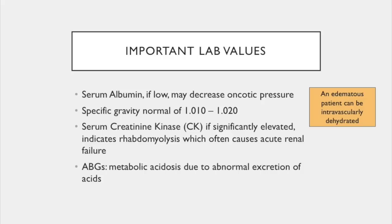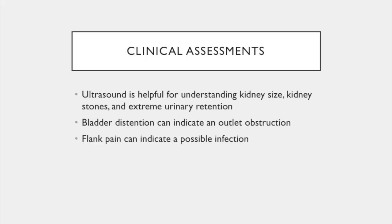Another important lab to evaluate kidney failure status is arterial blood gases, which can reveal a decrease in the reabsorption of sodium and water in acidosis. Useful clinical assessments include ultrasound, helpful for understanding kidney size, kidney stones, extreme urinary retention, and bladder distension, which can indicate an outlet obstruction such as prostate enlargement, cancer, tumor, strictures, or neurogenic bladder from neurological disease or diabetes.